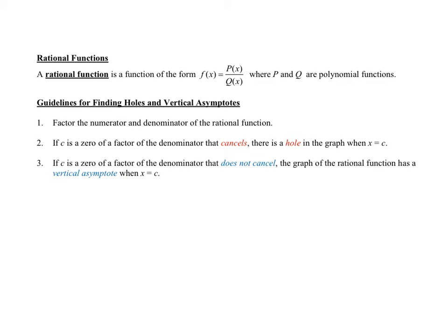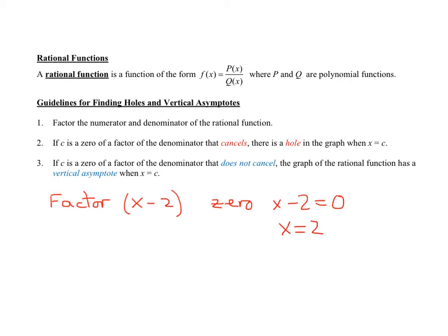Just to remind you what this means: if I have a factor, say x minus two, what is the zero that goes with that factor? The zero is when x minus two equals zero, or x equals two. So if you have a factor x minus c and it totally cancels out of the denominator, then there's a hole in the graph at x equals c.